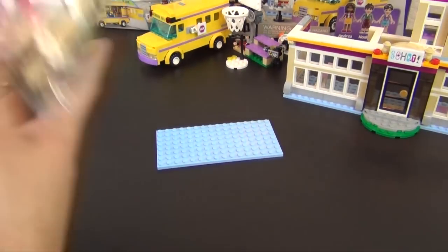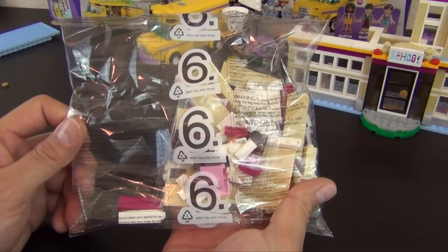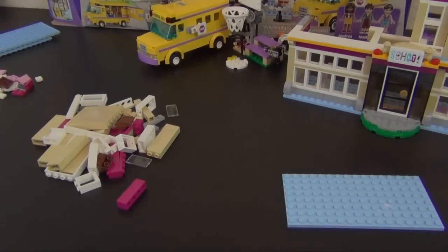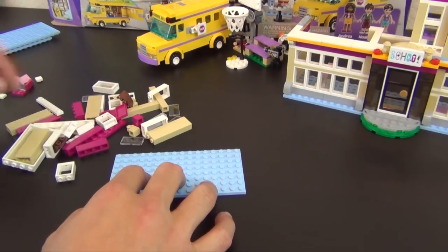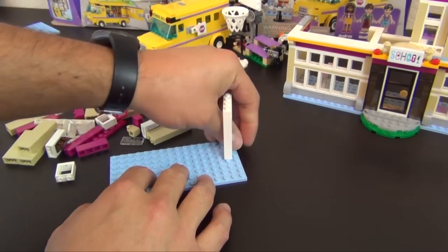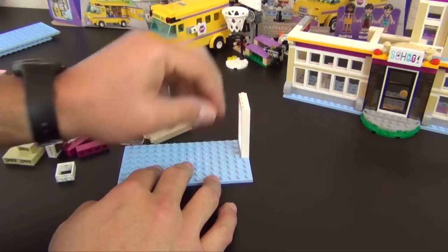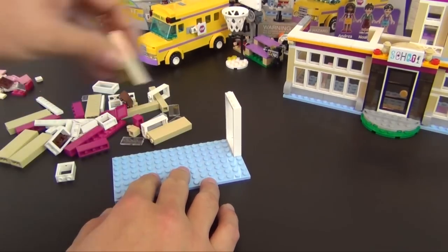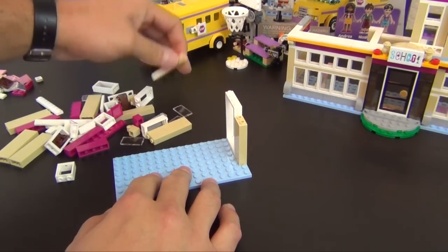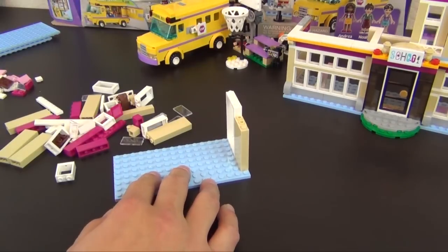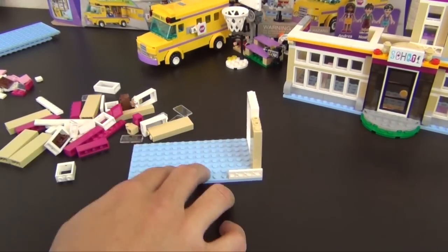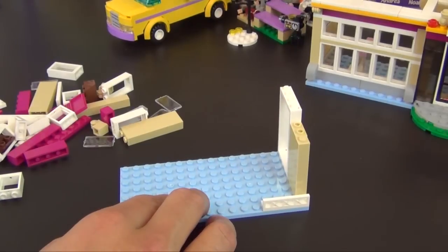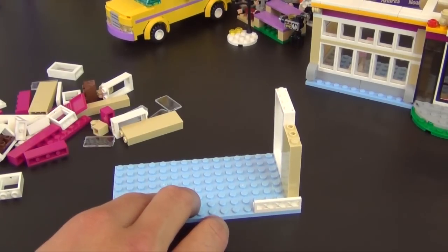All right, so we're now on to bag number six. Just like bag number five, bag number six is using one of these loose plates and we're going to build another level of the school or another portion of it. It's basically the piece right next to the one that we just built.